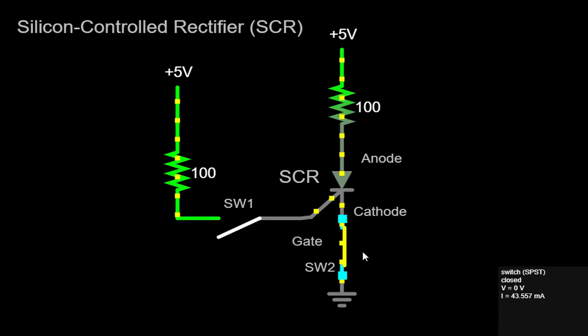Once triggered, the SCR continues to conduct even if the gate voltage is removed. It remains in this conducting state until the forward current drops below a certain threshold called the holding current. At that point, the SCR turns off and goes into a non-conducting state until triggered again.